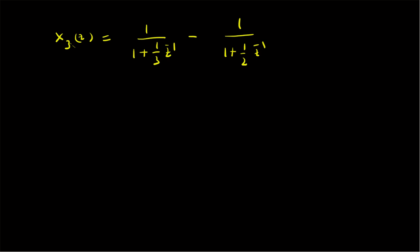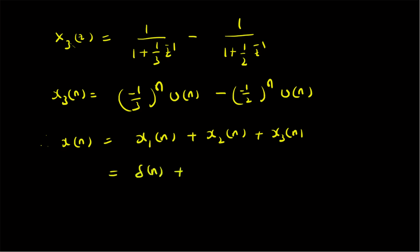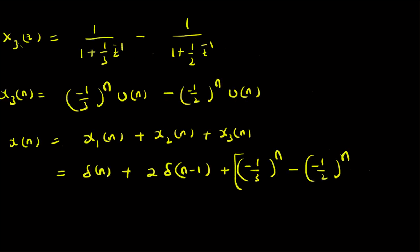We can now easily write the time domain function: x₃(n) = (−1/3)ⁿ·u(n) minus (−1/2)ⁿ·u(n), based on standard z-transform definitions. Combining all three components using the linearity property, x(n) = x₁(n) + x₂(n) + x₃(n). Since weights are all 1, x(n) = δ(n) + 2·δ(n−1) plus [(−1/3)ⁿ − (−1/2)ⁿ]·u(n).